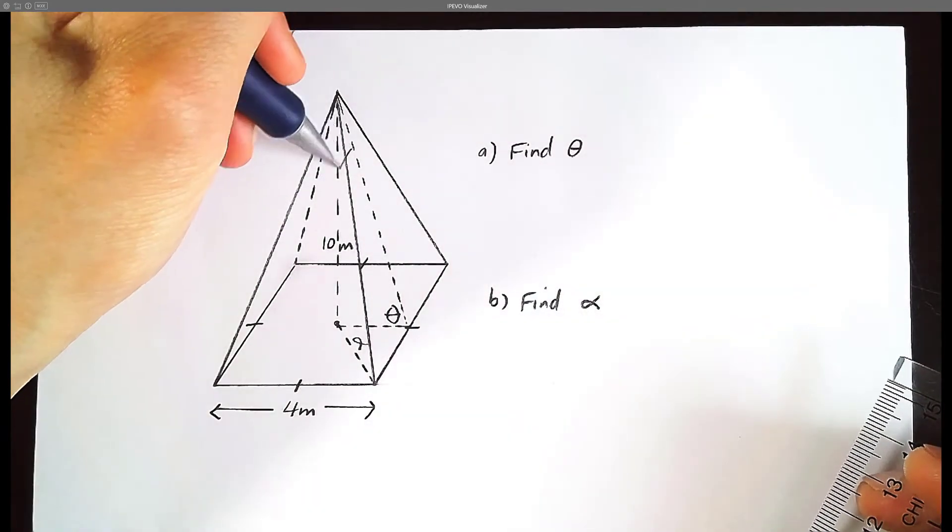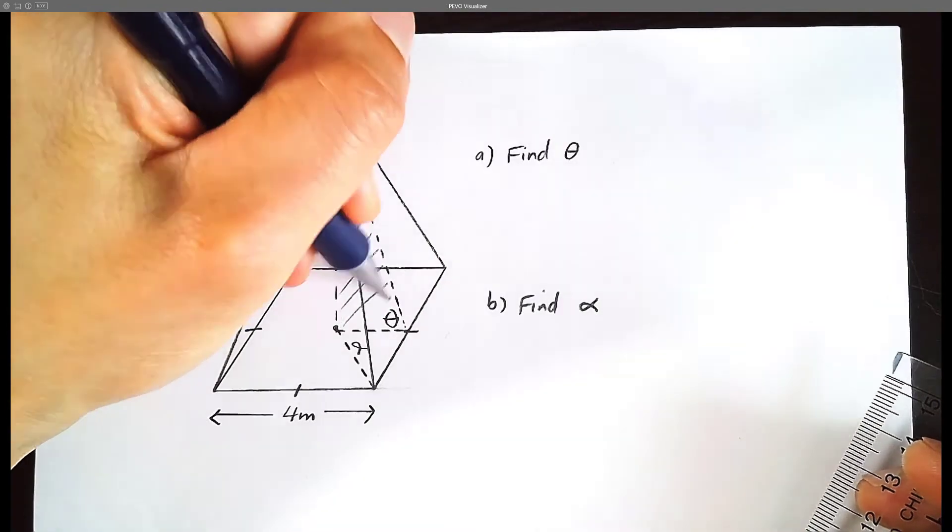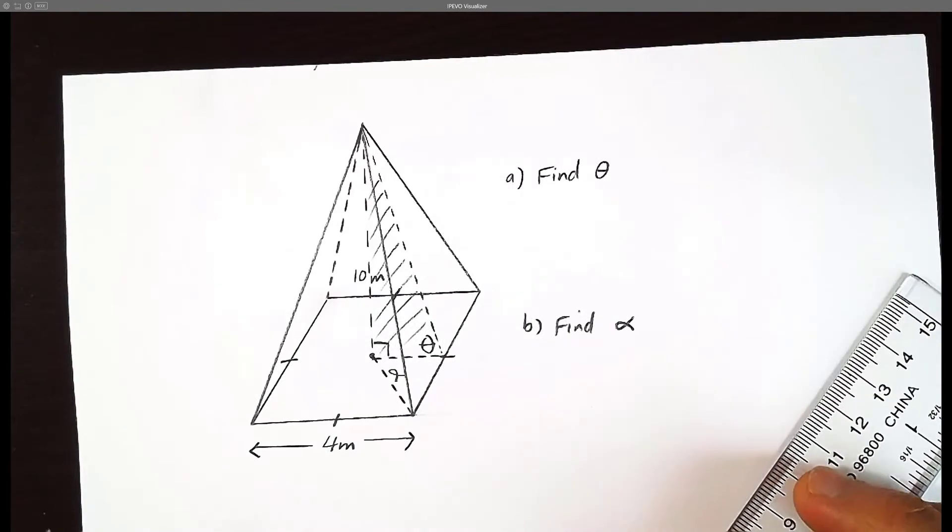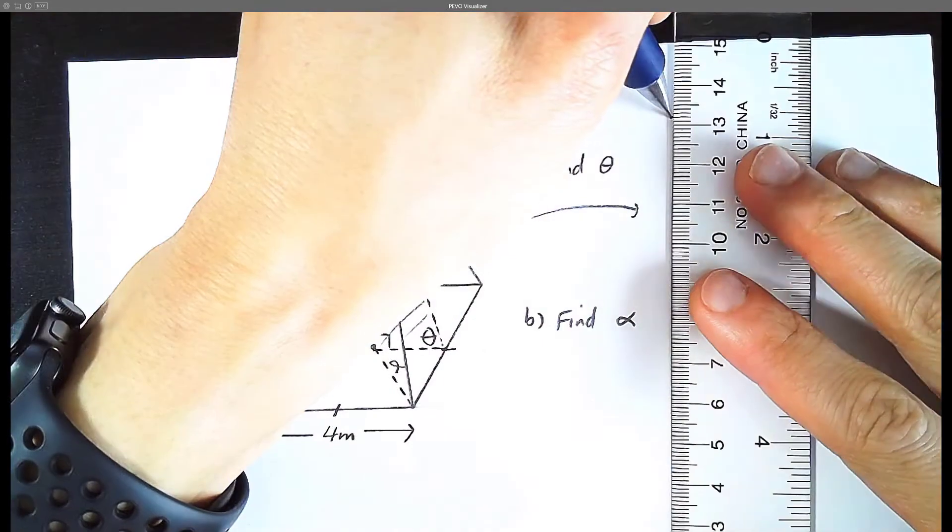And for theta, we're focusing on this triangle over here. This is a right angle triangle. We can assume that this is a right square base pyramid. So this here is a right angle. And let's redraw this triangle so you can see things a bit more clearly.